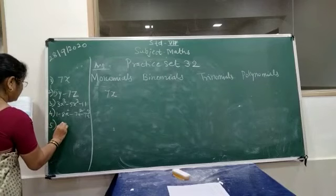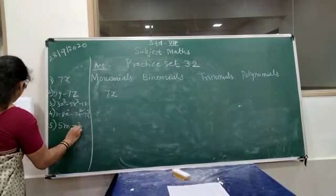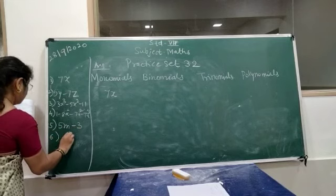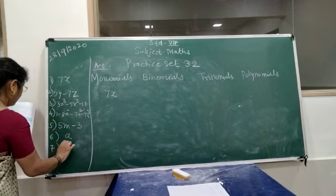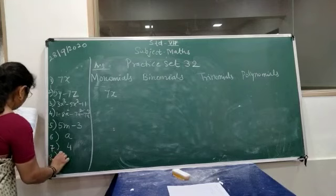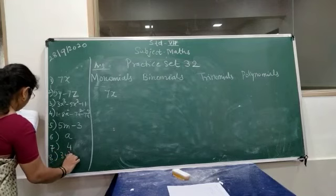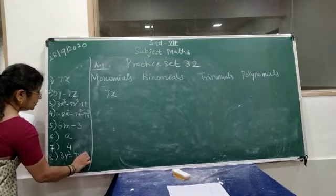Fifth one is 5m minus 3. Sixth one is 8. Seventh one is 4. Eighth one is 3y square minus 7y plus 5.